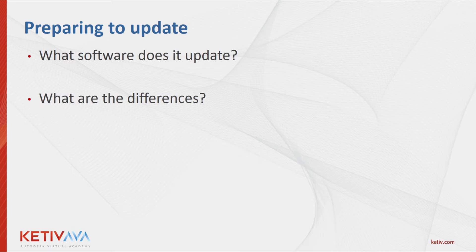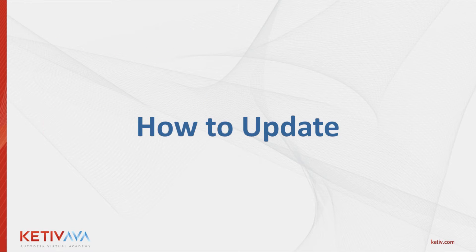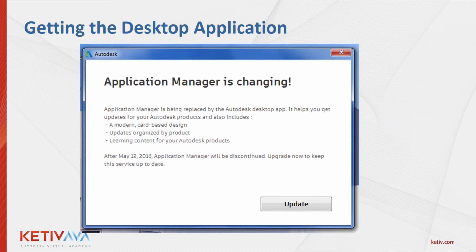Now we get to what is probably the easiest part — actually updating your software. If you still have your application manager and you try to check for updates, it won't show you software updates. Instead it'll tell you that the application manager itself has an update and that it's going to the desktop app. Once you click that update button, it'll download and install the desktop application. This process also uninstalls your application manager to avoid any conflict between them.